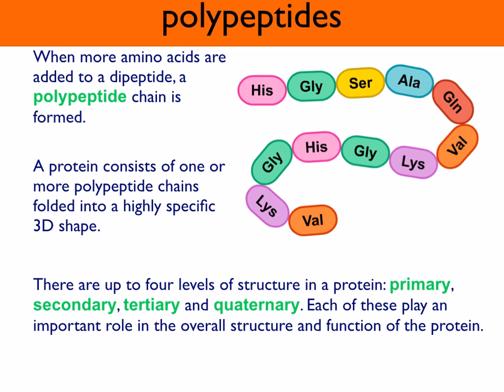There are up to four levels of structure in a protein: primary, secondary, tertiary and quaternary. Each of these plays an important role in the overall structure and function of the protein.